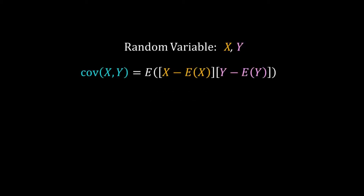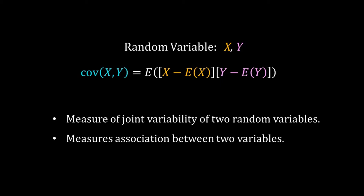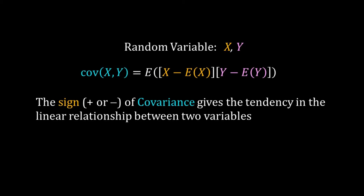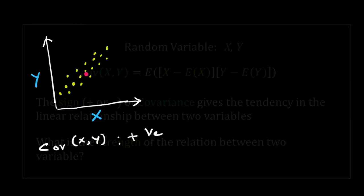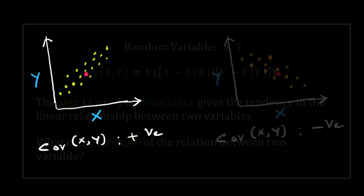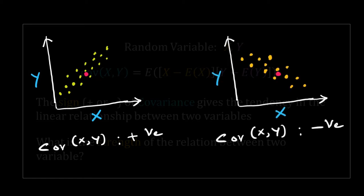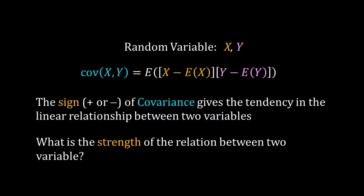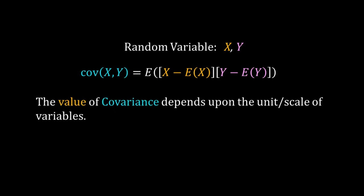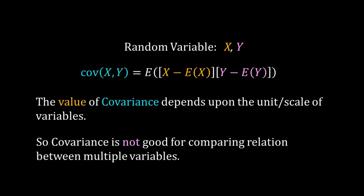In our last video we learned about covariance. Covariance is a measure of joint variability of two random variables. The sign of the covariance tells us the tendency in the linear relationship between two variables — positive when y increases linearly with x, and negative when y decreases linearly with x. However, covariance says nothing about the strength of the relationship, and it depends on the unit or scale of the variables, so we cannot compare two covariances directly.